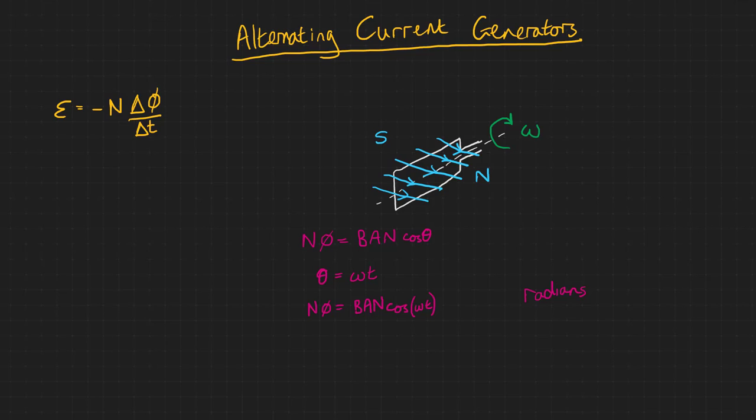Faraday's law says that the magnitude of the induced EMF is equal to the rate of change of flux linkage. This means if we differentiate our flux linkage equation with respect to time we should get an equation for the EMF induced in our spinning coil.